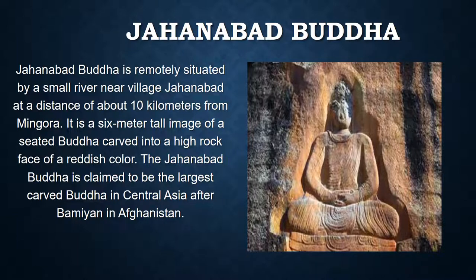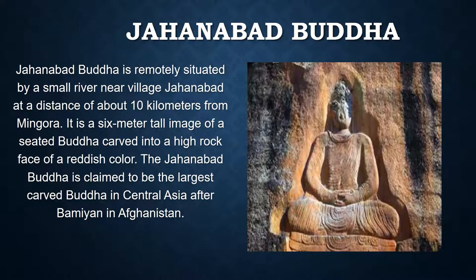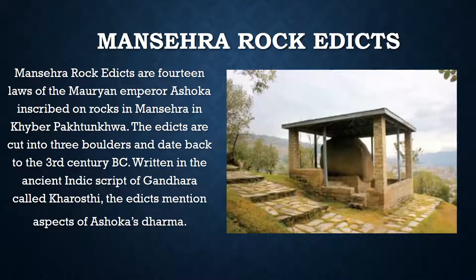Jahanabad Buddha is very famous, and sadly it was defaced by the Taliban but has been reconstructed by the Italian archaeological mission. It is actually a six-meter-tall image of a seated Buddha — the largest carved Buddha in Central Asia after Bamiyan. The Mansehra rock edicts, preserved on-site in Kharosthi script, contain the edicts of Emperor Ashoka carved after he became Buddhist, and all of these texts have been translated and widely read by scholars.